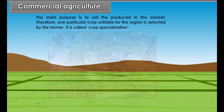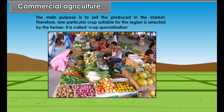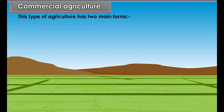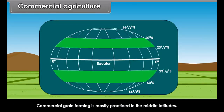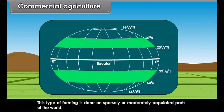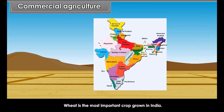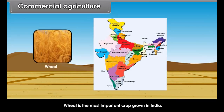In commercial agriculture, the main purpose is to sell the produce in the market. Therefore, one particular crop suitable for the region is selected by the farmer — this is called crop specialization. Commercial agriculture has two main forms: commercial grain farming and plantation agriculture. Commercial grain farming is mostly practiced in the middle latitudes, in sparsely or moderately populated parts of the world. Wheat is the most important crop grown.